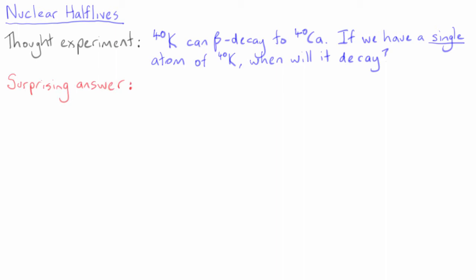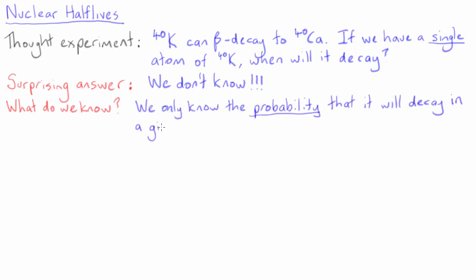The surprising answer turns out to be that no, we can't say when it will decay. In fact, it turns out that the only thing we can know is the probability that the nucleus will decay in a given time interval.